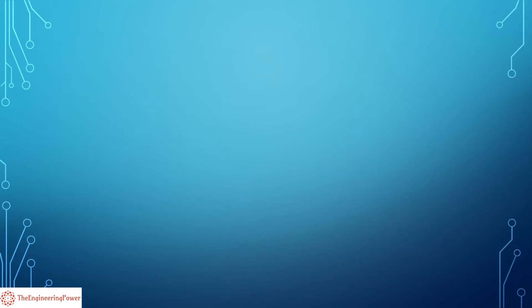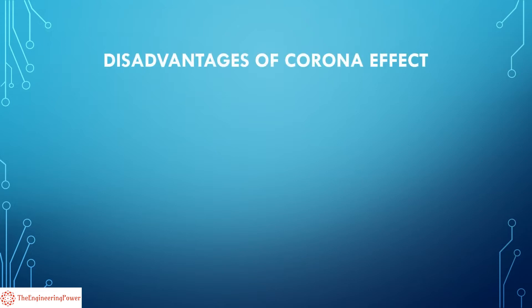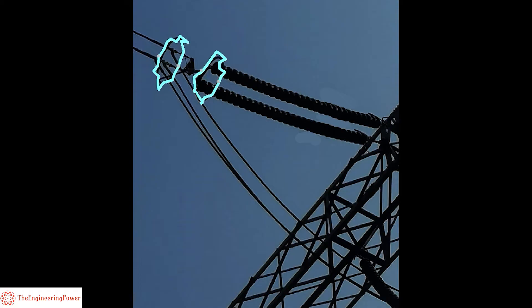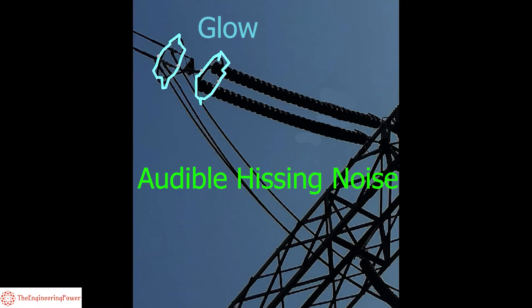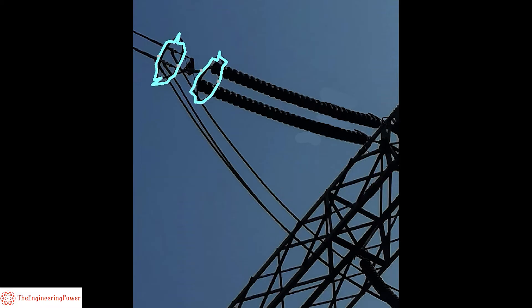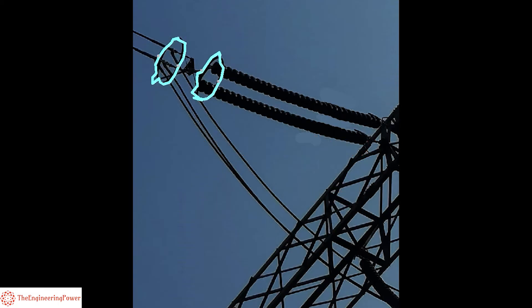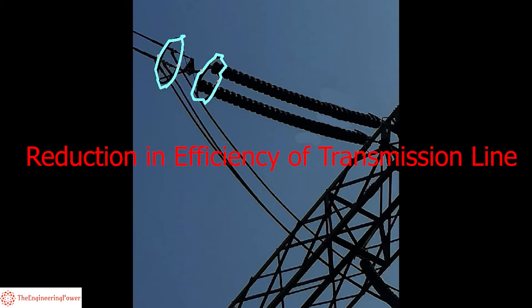Now we discuss some of the disadvantages of corona effect. Due to corona effect, energy is dissipated in the system, which is referred to as corona loss. The energy is dissipated in the form of a visible glow and audible hissing noise. This power loss is highly undesirable and uneconomical, and results in the reduction of the efficiency of the transmission line.